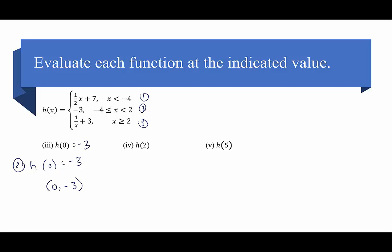For h of 2: 2 is greater than or equal to 2, which is true, so we plug it into the third piece. The third piece gives h of 2 equals 1 over 2 plus 3, which is one-half plus 3, equals 3 and a half — or 7 halves, or 3.5. We can write the ordered pair 2 comma 3 and a half.